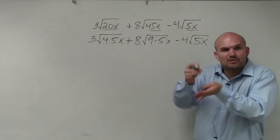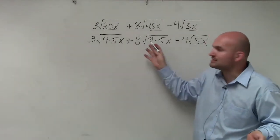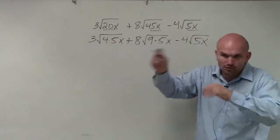So I could use prime factorization if you guys wanted to. You could say that's 2 times 2 and that's 3 times 3, right? And circle them and take them out.